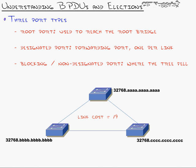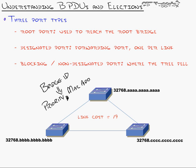To understand how Spanning Tree elects the best switch as root bridge, we need to understand BPDUs and how elections work. All devices in the network have a bridge ID, which is their Spanning Tree identity. That bridge ID is built of two pieces: a priority value and the switch's own MAC address. By default, every switch out of the box has the same priority: 32,768.